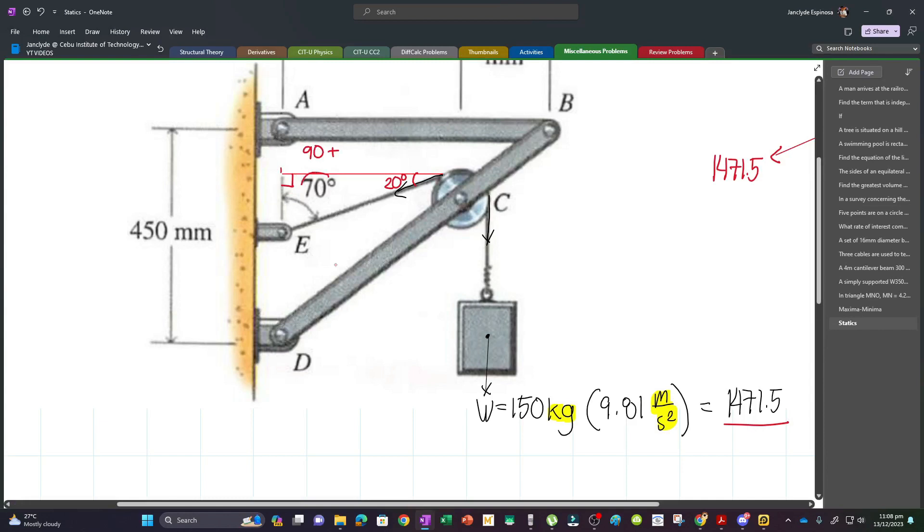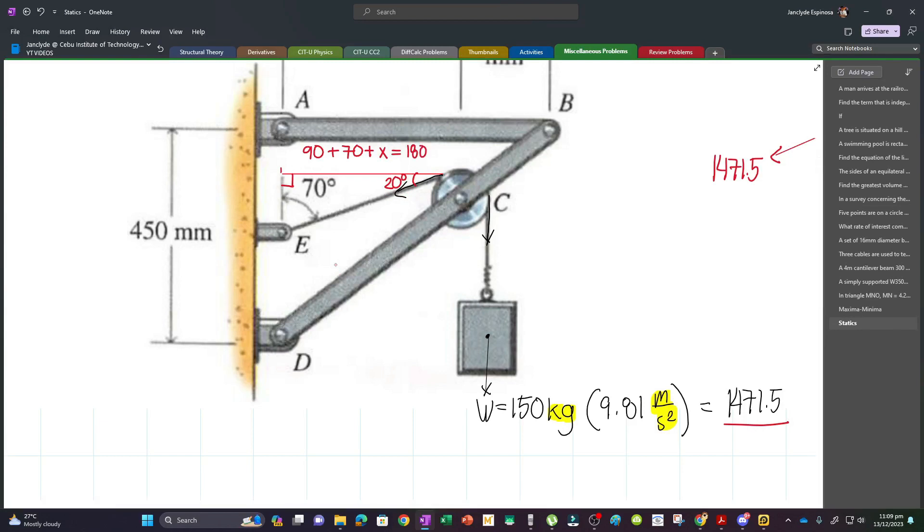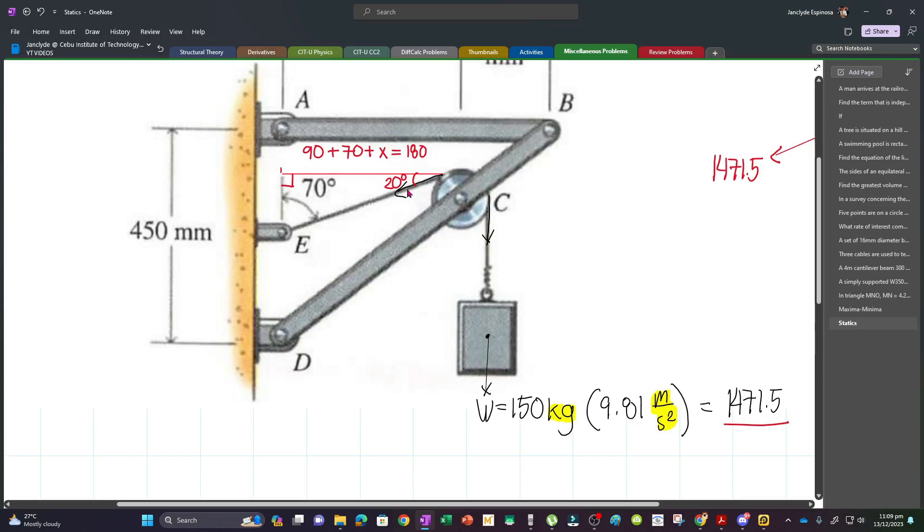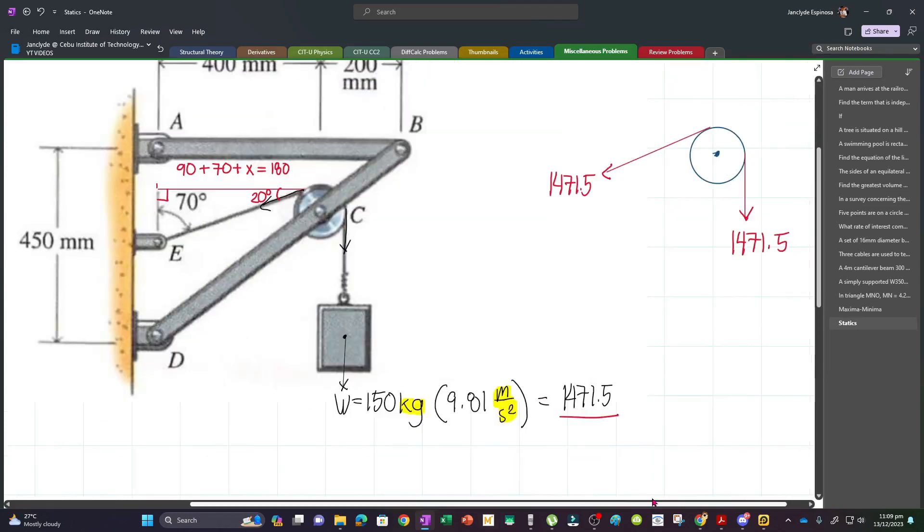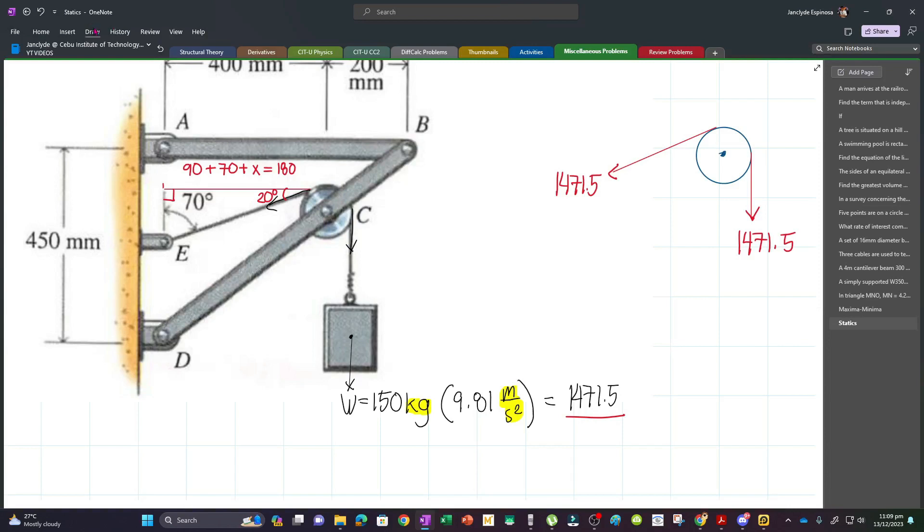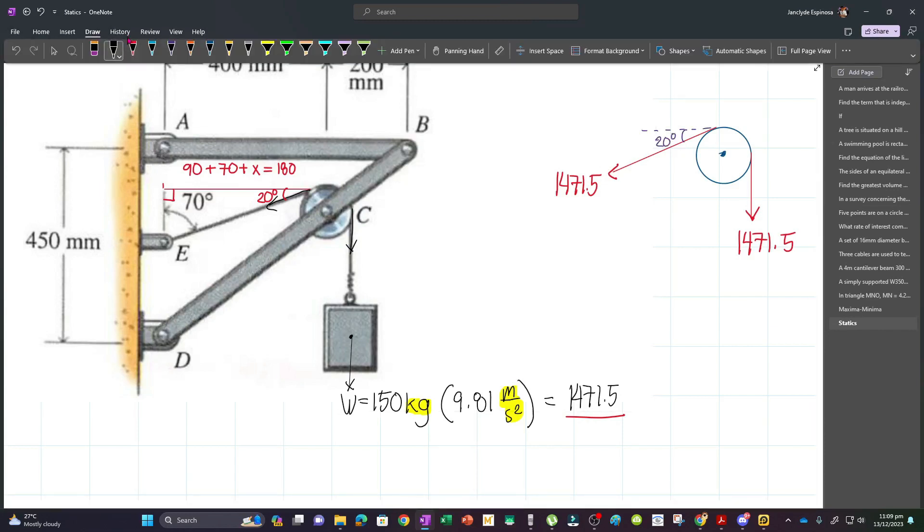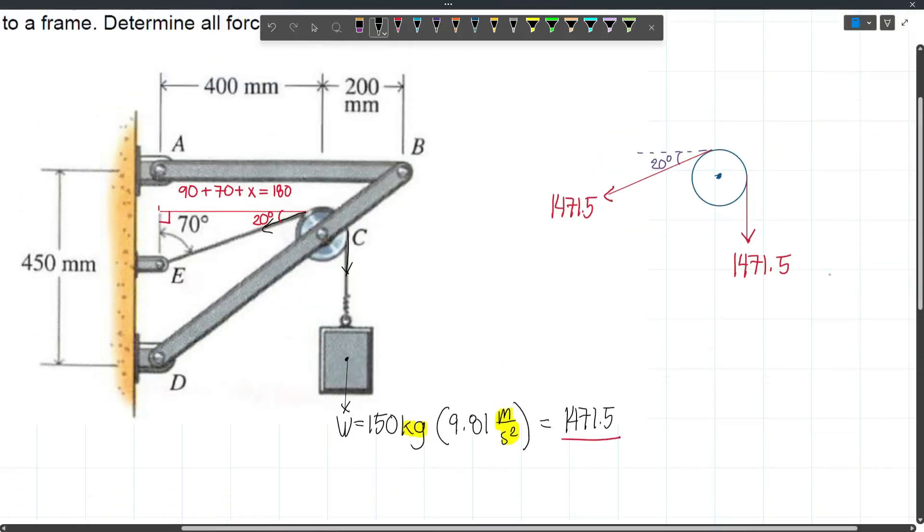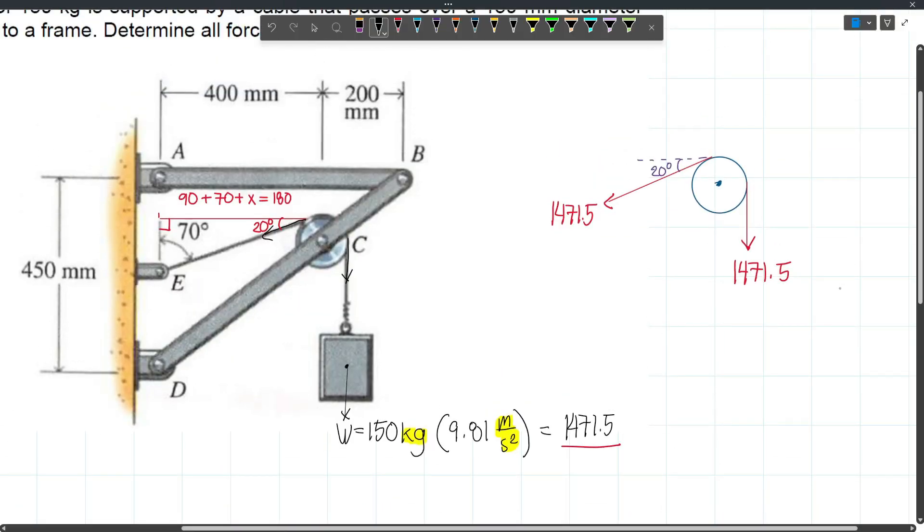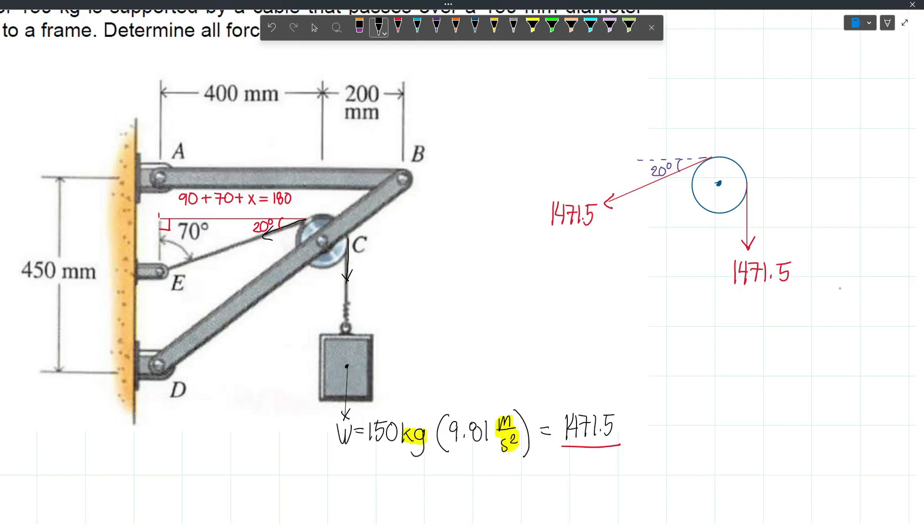The sum of interior angles in a triangle is 180. The right angle is 90 plus 70 degrees plus this angle. So 180 minus 90 minus 70 gives you 20.